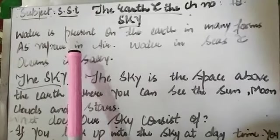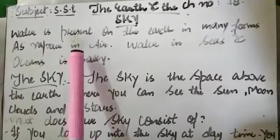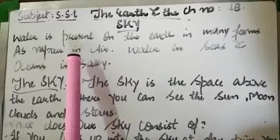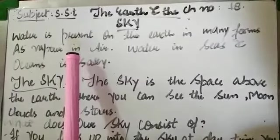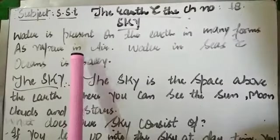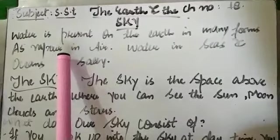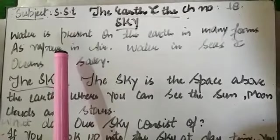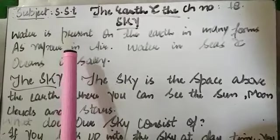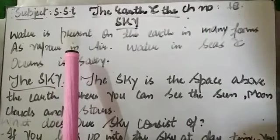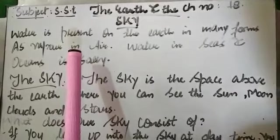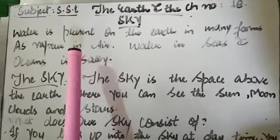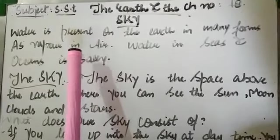If we talk about vapor, there are also little water droplets in the air. There is also water which is vapor. When we boil the water, it also goes into the air, which is made of water droplets.